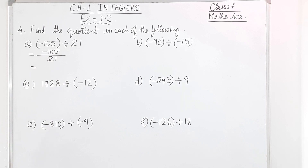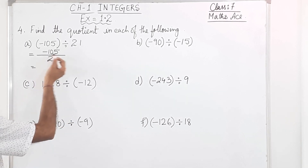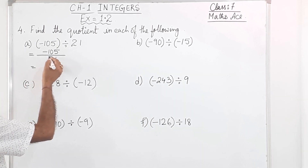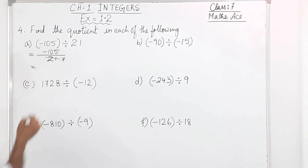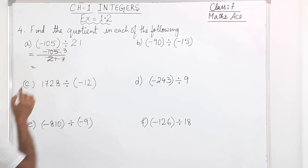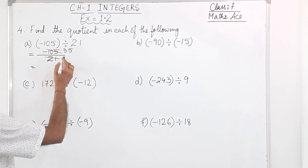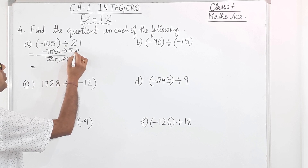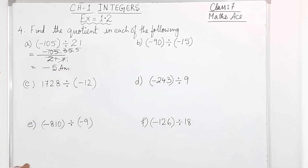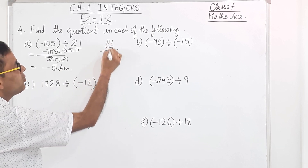You can cut it directly. If you don't know the 21 table, you can cut with 3 first: 3 into 7 is 21, and on top 3 into 35 is 105, leaving 35 over 7. Then cut again: 7 into 7 is 1, and 7 into 35 is 5. So the answer is minus 5.